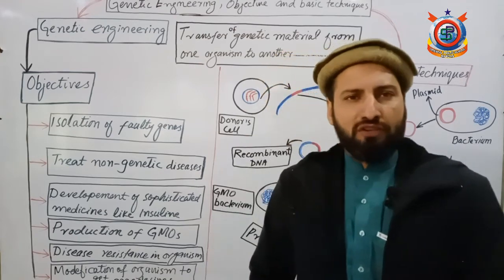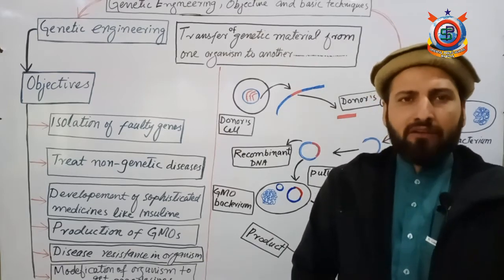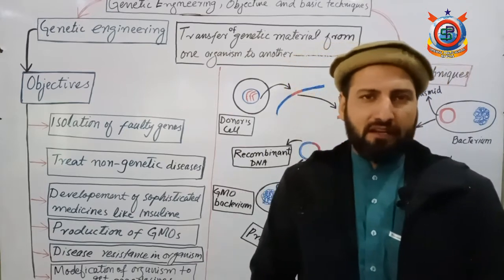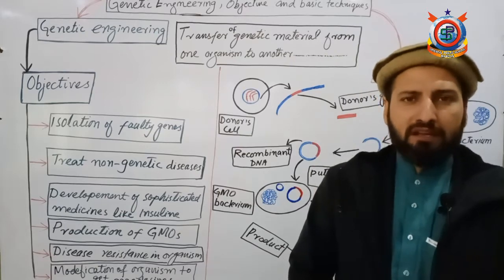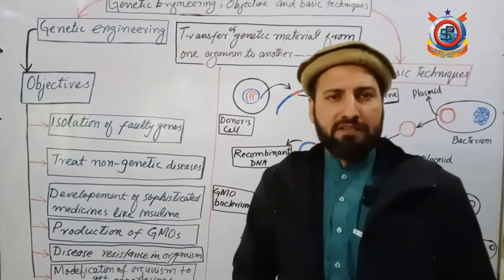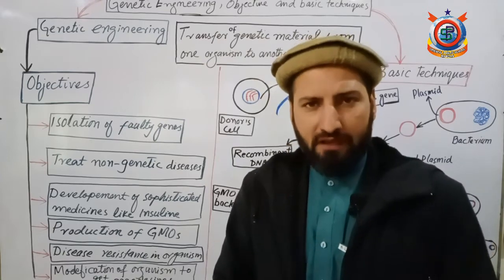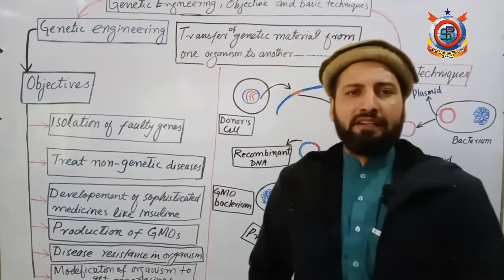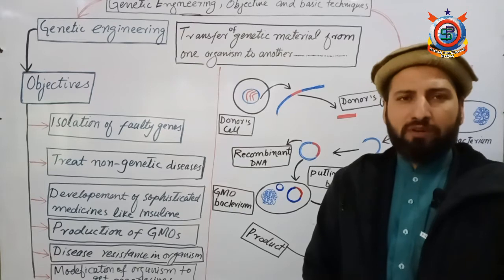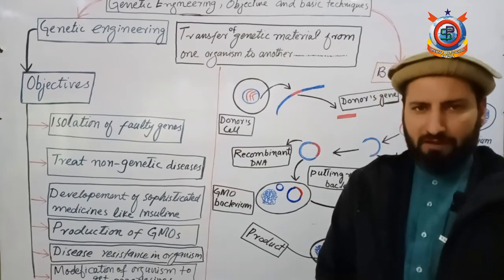After identifying the faulty gene, scientists isolate it from the body and replace it with a normal gene taken from another organism. That normal gene is fixed into the DNA, and when the DNA enters the body and is expressed, the gene shows itself and the disease is eliminated. So the first objective is that through genetic engineering we can treat genetic diseases — illnesses that are produced in the body due to a faulty gene.